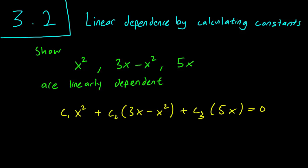So by the definition of linear dependence, if we can find c1, c2, c3 that solve this equation, but where c1, c2, and c3 are not all zero, then we are done.